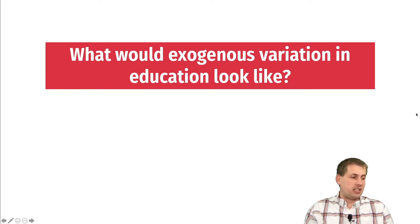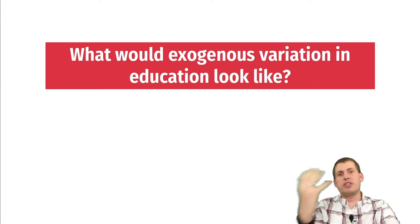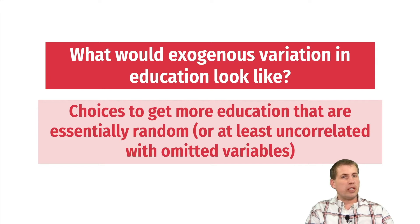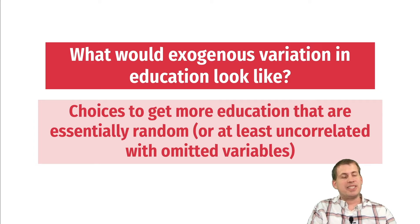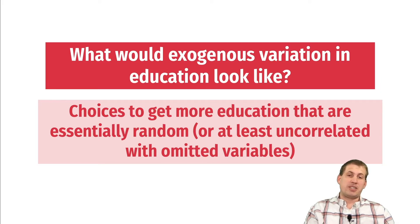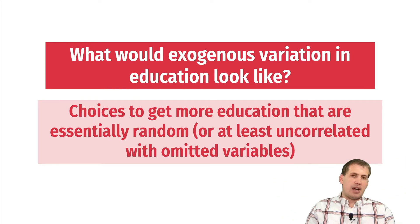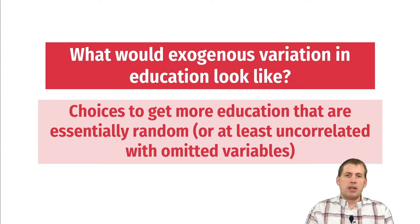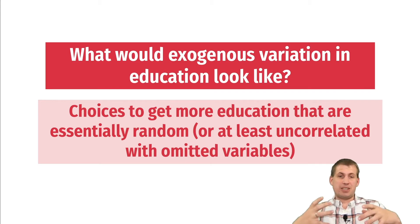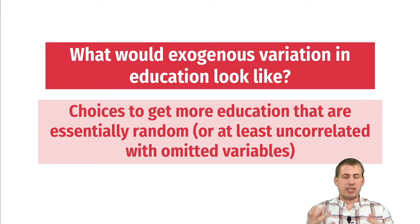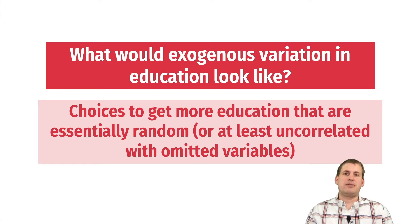Exogeneity in education would mean that choices to get more education are basically random — some people decide they want to go, some decide they don't, and it's not related to anything in their environment or history. If we think about it like a randomized control trial, some are assigned to more education and some to less, and that decision is fairly random. But lots of it is also influenced by endogenous factors like ability, income, time, number of kids in your family — there's a whole host of things that influence the decision to get more education.